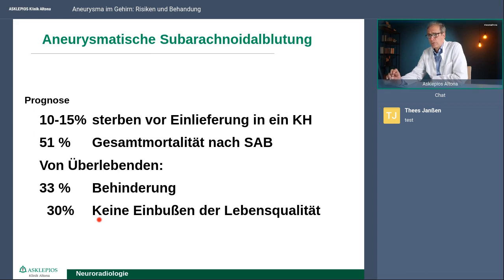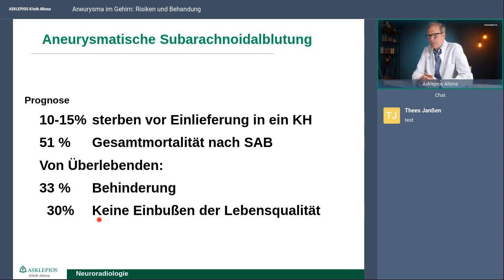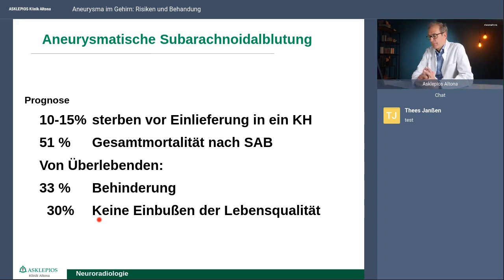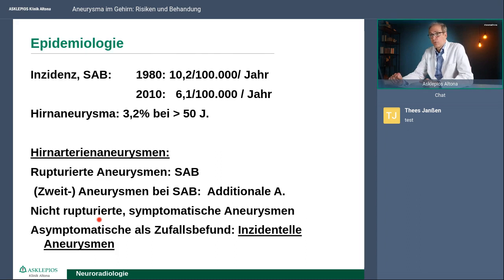Wenn es zu einer Blutung kommt, ist es immer gefährlich. Bis zu 15 Prozent der Patienten sterben, bevor sie das Krankenhaus überhaupt erreichen. Insgesamt versterben bei einer SAB – heutzutage wahrscheinlich eher 30 bis 40 Prozent – eine beträchtliche Mortalität. Von denen, die überleben, haben immerhin 30 bis 33 Prozent eine relevante Behinderung. Aber bis zu 30 Prozent der Überlebenden können vollständig zu ihrem normalen Leben zurückkehren. Deswegen ist es entscheidend, dass die Patienten schnell und rechtzeitig ins Krankenhaus kommen, bevor es zu einer neuen Blutung kommt.